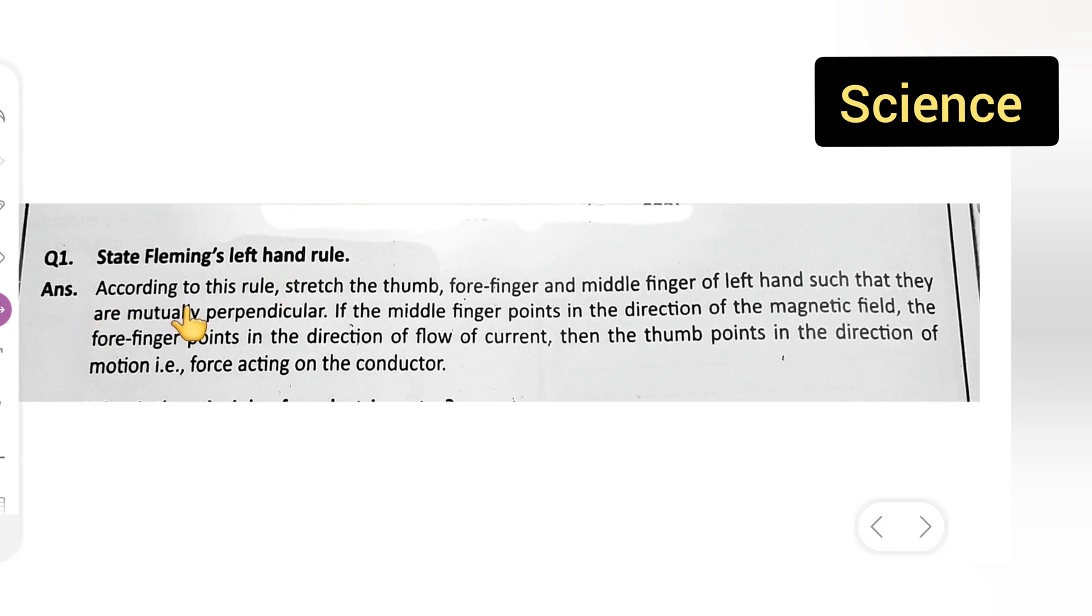According to this rule, stretch the thumb, forefinger, and middle finger of the left hand such that they are mutually perpendicular. If the middle finger points in the direction of the magnetic field and the forefinger points in the direction of flow of current, then the thumb points in the direction of motion, that is, force acting on the conductor.